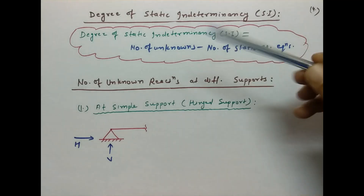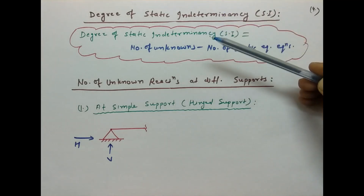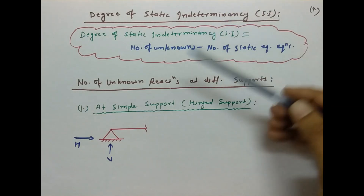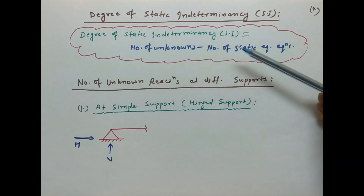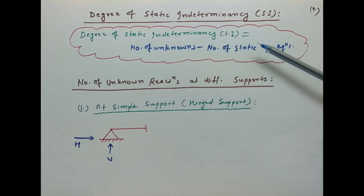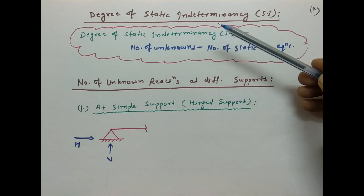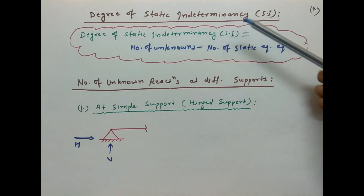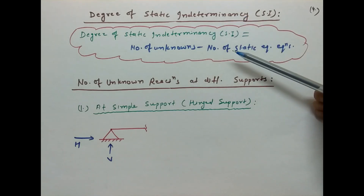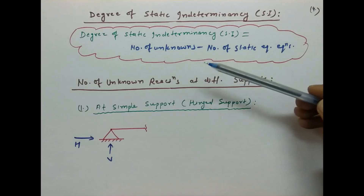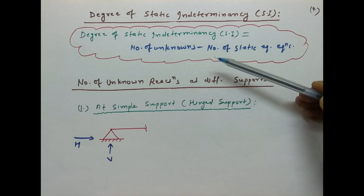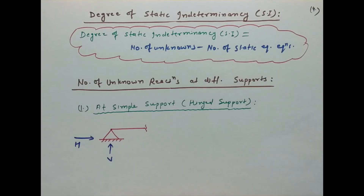अब हम बात करते हैं degree of static indeterminacy की। Degree of static indeterminacy = number of unknowns minus number of static equilibrium equations. इससे हम find out कर सकते हैं कि कोई particular beam statically indeterminate है या determinate है।